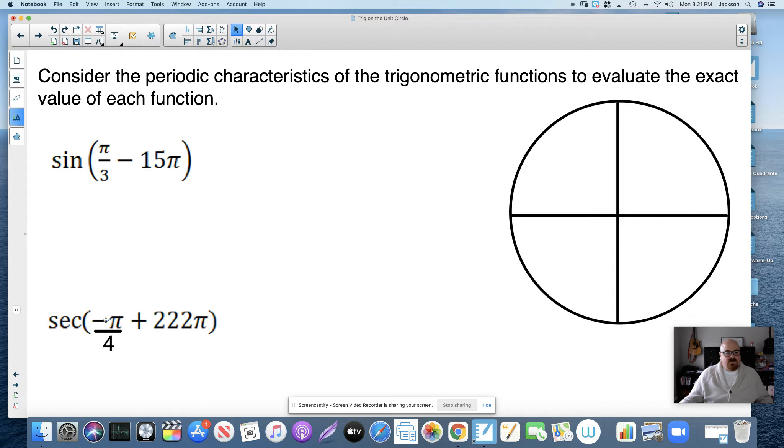This is secant of negative pi over 4 plus 222 pi. First and foremost, let's figure out where negative pi over 4 is. At this point, you should have a pretty good understanding - negative angles get measured this way, and pi over 4 is equivalent to 45 degrees. So the angle that we start with in this problem is this angle right here. That's negative pi over 4.